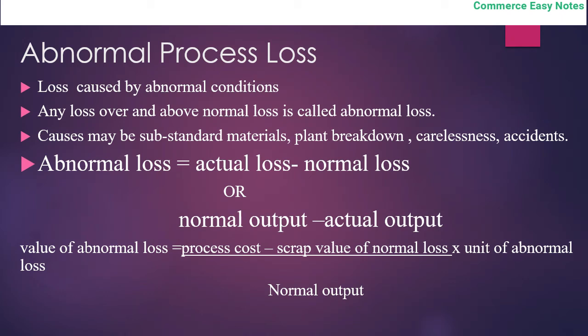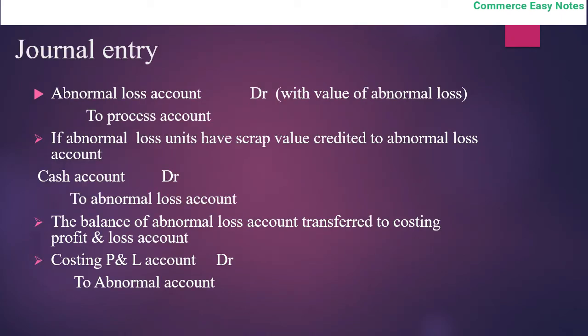Before looking at a detailed example, we need to note the journal entries. When abnormal loss arises, abnormal loss account is debited to process account. If abnormal loss units have scrap value, cash account is debited to abnormal loss account. The balance of abnormal loss account is then transferred to the costing profit and loss account.